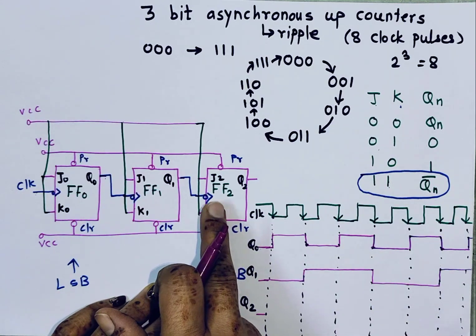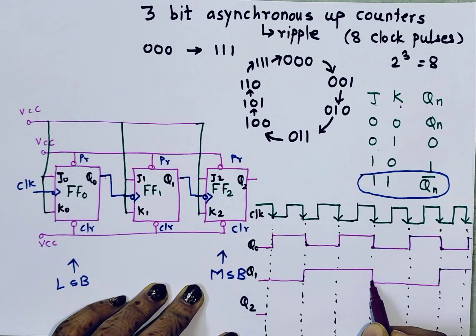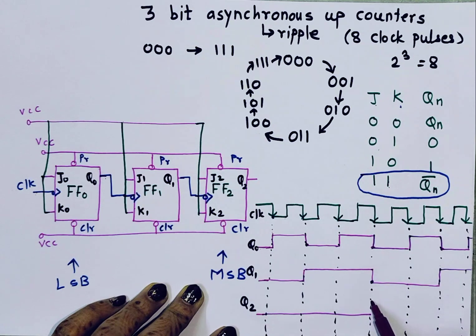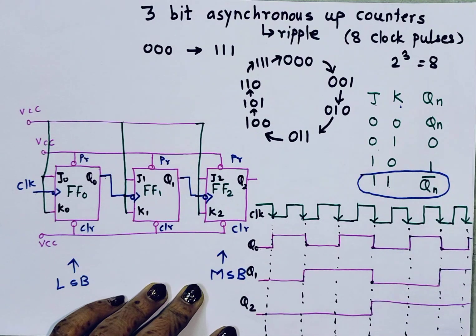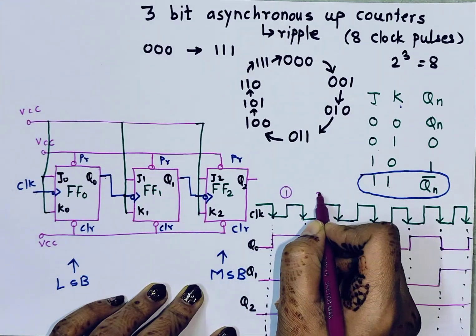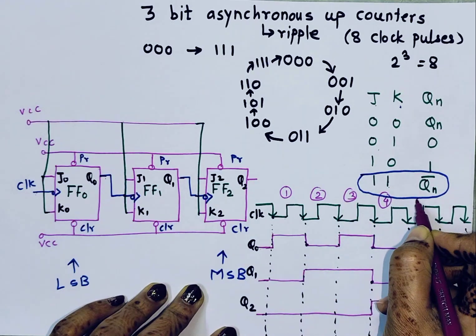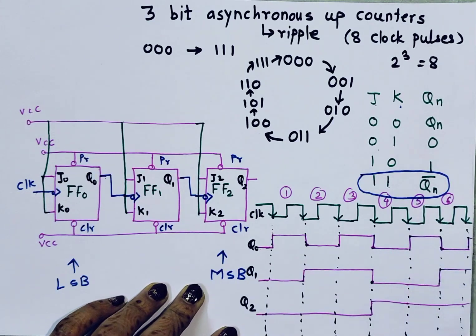The clock input to FF2 is Q1. At the falling edges of Q1, Q2 toggles — from 0 to 1 at the first falling edge, and back to 0 at the next. So across the 8 clock pulses — first, second, third, fourth, fifth, sixth, seventh, and eighth — we can observe all three output waveforms Q0, Q1, and Q2.